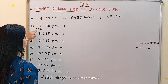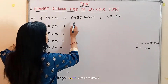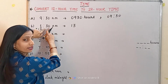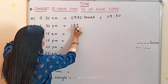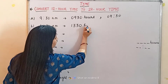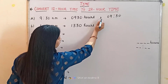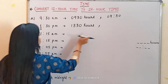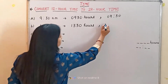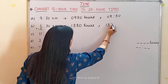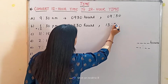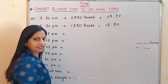When we add 12 to 1, we get 13. So we write 1330 — the minutes remain the same. Then we write 'hours' at the end. The second way: we write 13, put the colon, and write 30. So it is 13 hours 30 minutes.